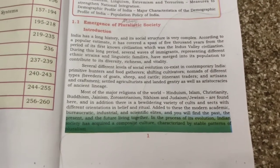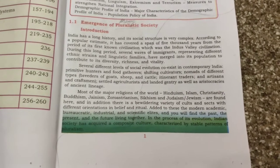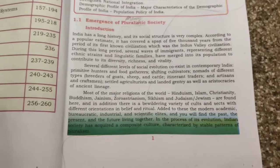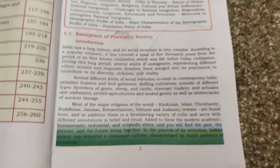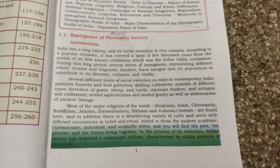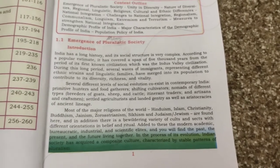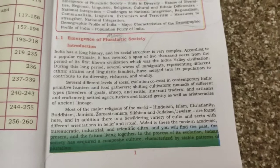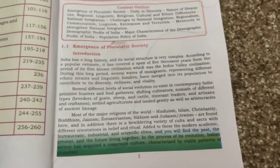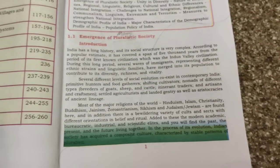There are also breeders of goats, sheep and cattle, itinerant traders, artisans and craftsmen, settled agriculturists and landed gentry, as well as aristocrats of ancient lineage. Shifting cultivators would cultivate in one place for some months and then move on. Nomads move from one place to another, settling for the sake of cattle rearing.